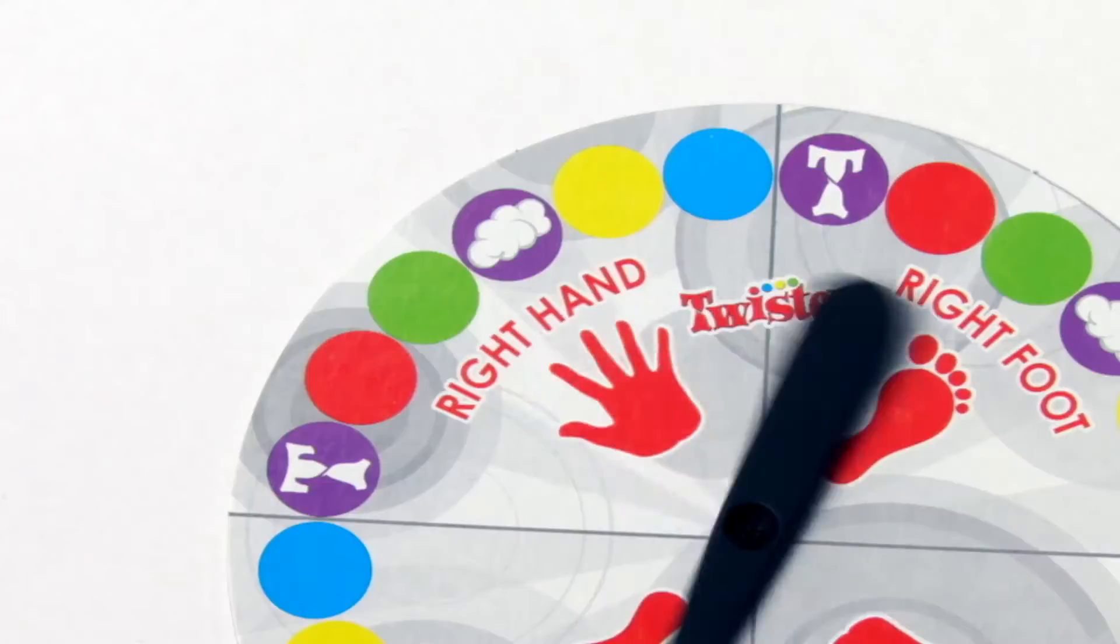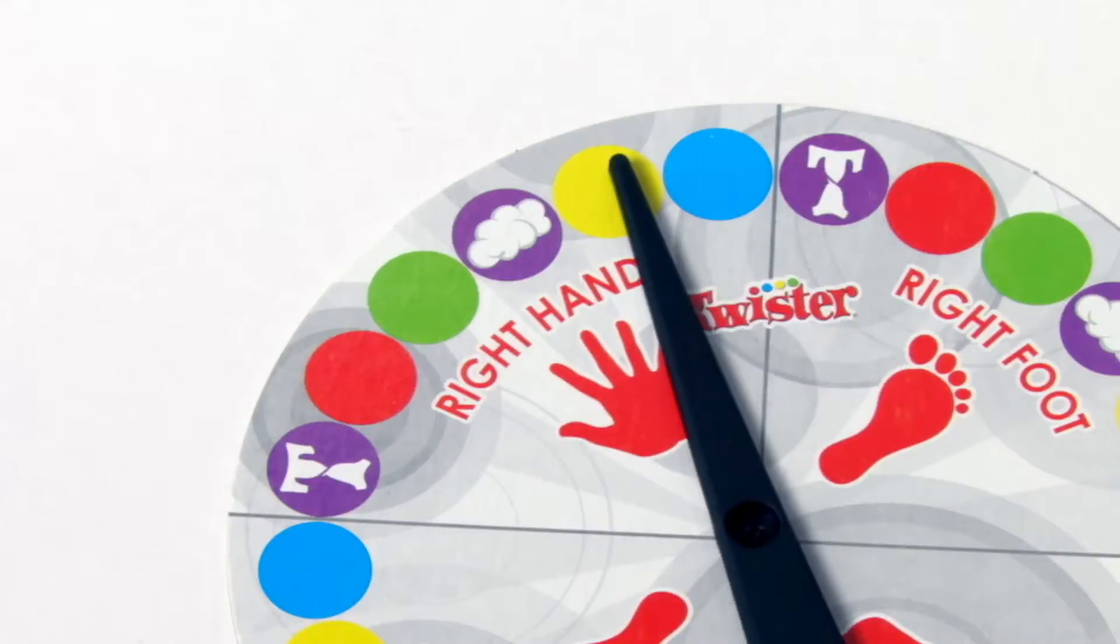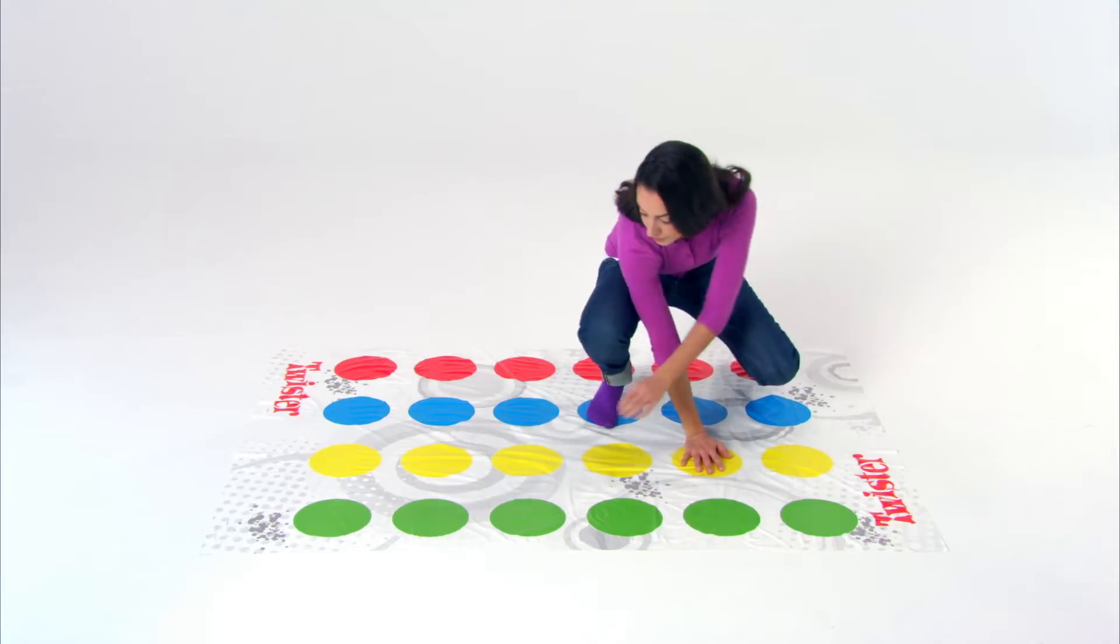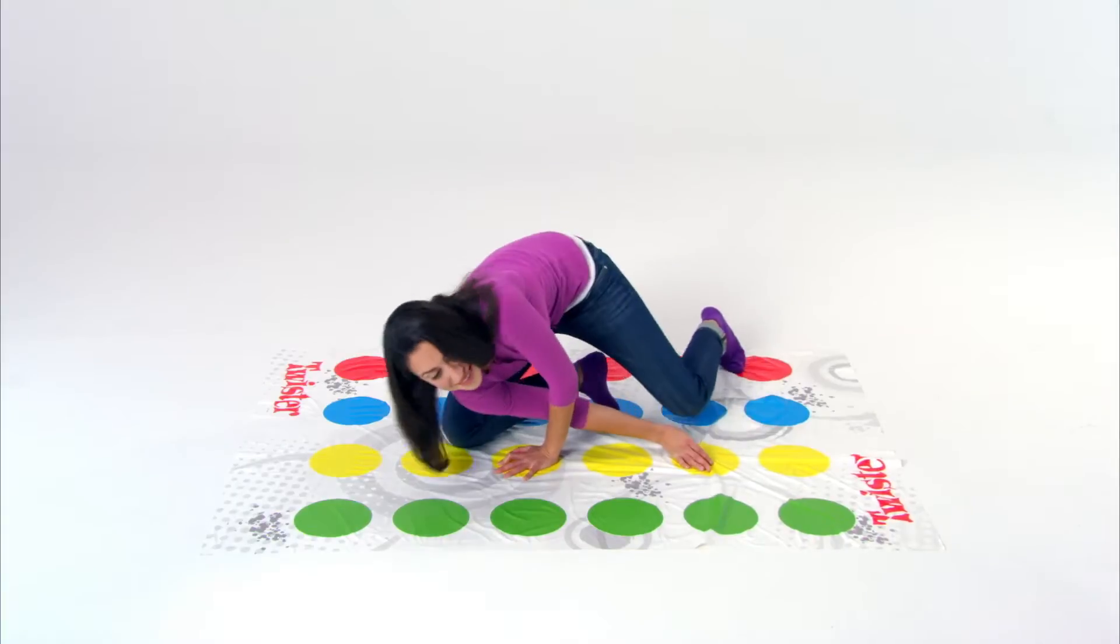Give the spinner a whirl and see what's next as you try to keep your hands and feet on the mat. If your knee or elbow touches the mat or you fall over, you're out.